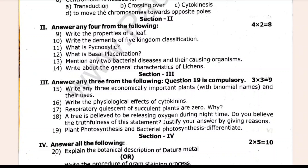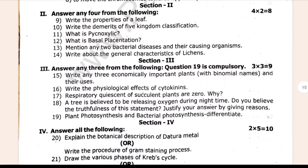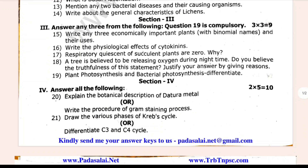The topic for 2 and 3 marks: Plant photosynthesis and bacterial photosynthesis difference. C3 and C4 cycle, various steps of the Krebs cycle, products of gram staining processes, and botanical description of Datura metal. This section is 5 marks.